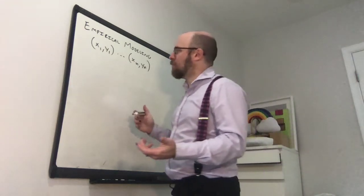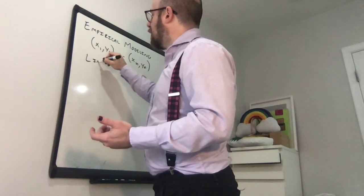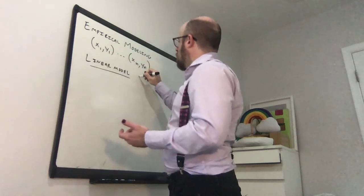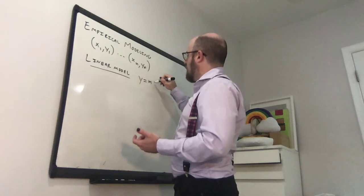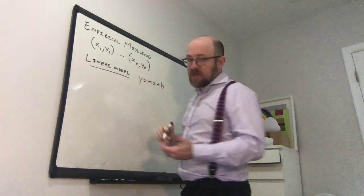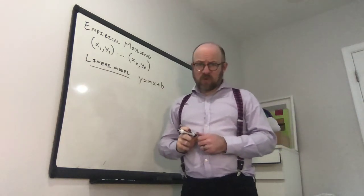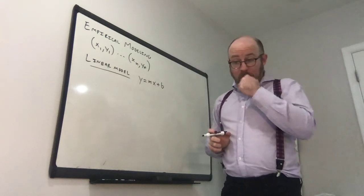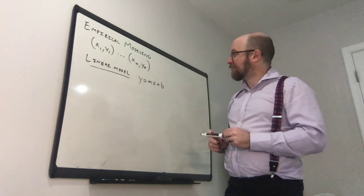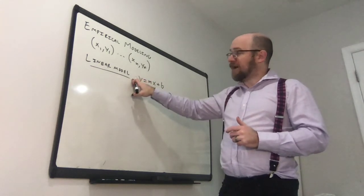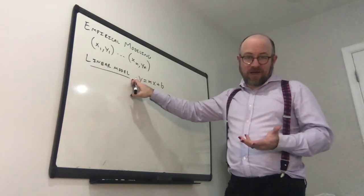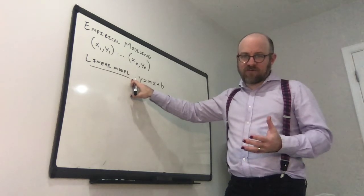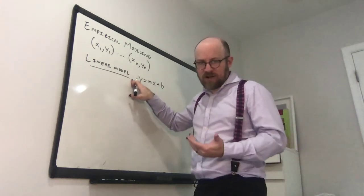And so the simplest example is a linear model, right, where y is equal to some mx plus b, right? And that's what we're going to start with. But we are going to consider more interesting models. So finding a linear model is called linear modeling. It's pretty basic. Again, it comes down to talking about covariance and correlation and then regression line. We'll talk about all of that.